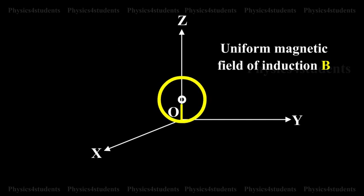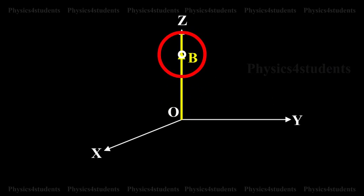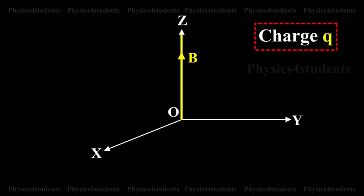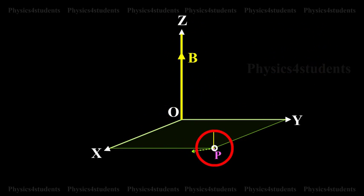Let us consider a uniform magnetic field of induction B acting along the Z-axis. A particle of charge Q and mass M moves in XY plane. At a point P, the velocity of the particle is V.